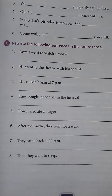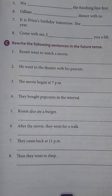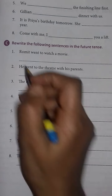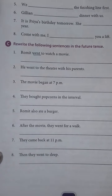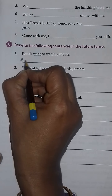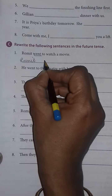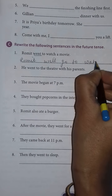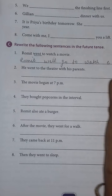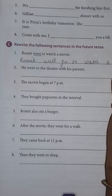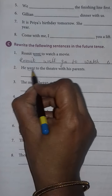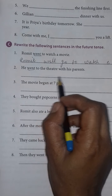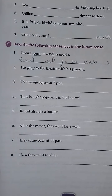Now children, look at exercise number C: rewrite the following sentences in the future tense. The first sentence is: Romit went to watch a movie. Went is the past form of the verb. The present form is go. So you will write: Romit will go to watch a movie. Second: He went to the theater with his parents. Went is past, so: He will go to the theater with his parents. You can do this exercise by yourself.